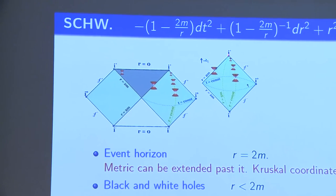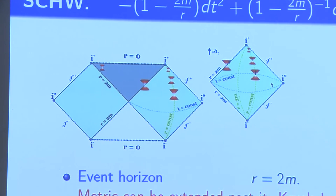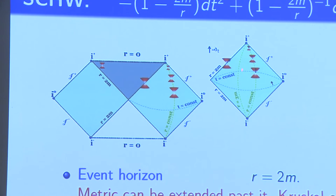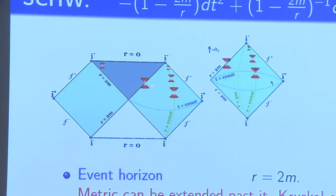r equal to infinity corresponds to the boundaries in the Penrose diagram, which are really at infinity. Light propagates at 45 degrees. If you are inside, you cannot escape — you will eventually hit the singularity. If you are outside, you may get into the black hole and hit the singularity, but you can also escape to infinity. That is the rough difference between the external and the black hole region.